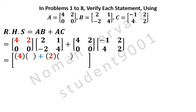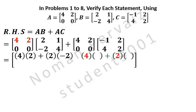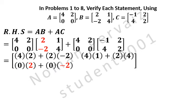For AB: first row of first matrix is 4 and 2; first column of second matrix is 2 and minus 2, so we write 2 and minus 2. First row of first matrix is 4 and 2; second column of second matrix is 1 and 4, so we write 1 and 4. Second row of first matrix is 0 and 0; second column of second matrix is 1 and 4, so we write 1 and 4.